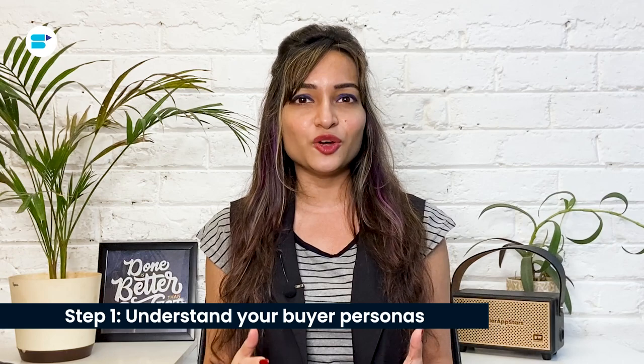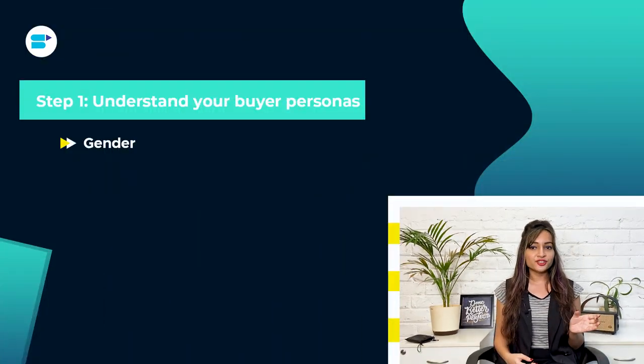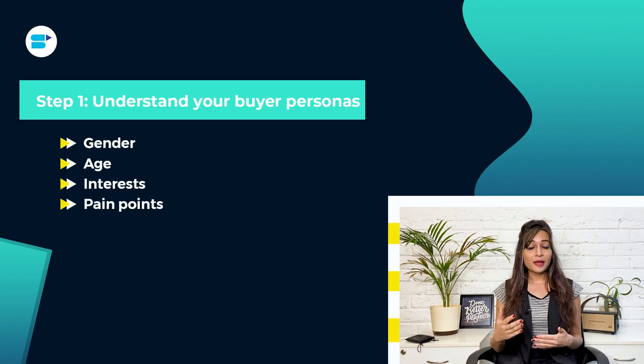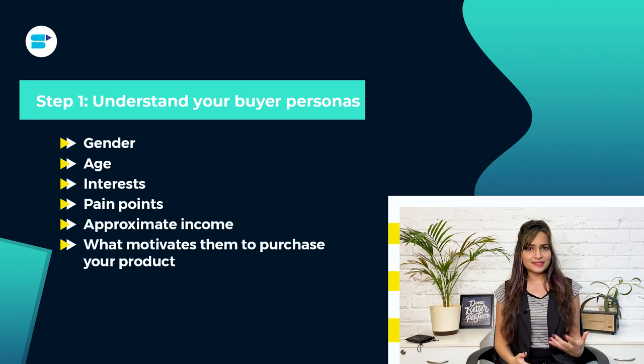The goal is to create a thorough list of keywords for each product. This will help you maximize the number of search queries that trigger your product listings, making your product more visible in Amazon search results. Step one: understand your buyer personas. Say for example you are selling kitchen towels. Start by identifying the type of customers likely to be interested based on factors such as gender, age, interests, pain points, and approximate income. What motivates them to purchase your kitchen towels? By creating buyer personas, you can more effectively generate relevant and targeted keywords most likely used by potential buyers.